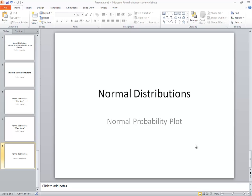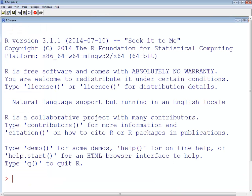This is normal distributions, creating a normal probability plot using the R programming language. Now specifically we're using R version 3.1.1. So there's nothing to say that it won't change in future versions of the language.